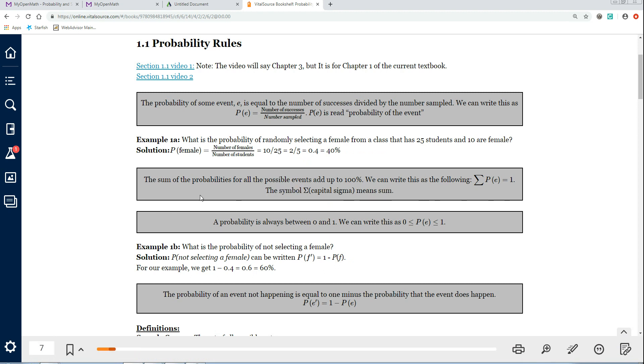Okay. So other general facts to know is that the sum of the probabilities for all the possible events always add up to 100%. For example, there's two possibilities for gender, male or female. And if you know that 60% are female, the remaining 40% are male, and they have to add up to 100%. If there's three possibilities, like you either have green eyes, blue eyes, or brown eyes, the probability of those three things have to add up to 100% because that covers everybody if there's only three possibilities.